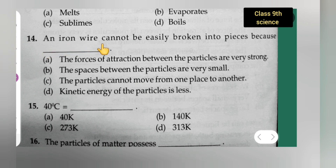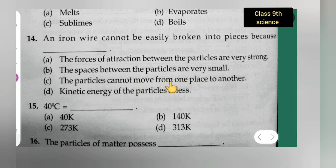Question 14: An iron wire cannot be easily broken into pieces because — option A is the forces of attraction between the particles are very strong, option B is the spaces between the particles are very small, option C is the particles cannot move from one place to another, option D is kinetic energy of the particles is less. The correct answer is option A — the forces of attraction between the particles are very strong.